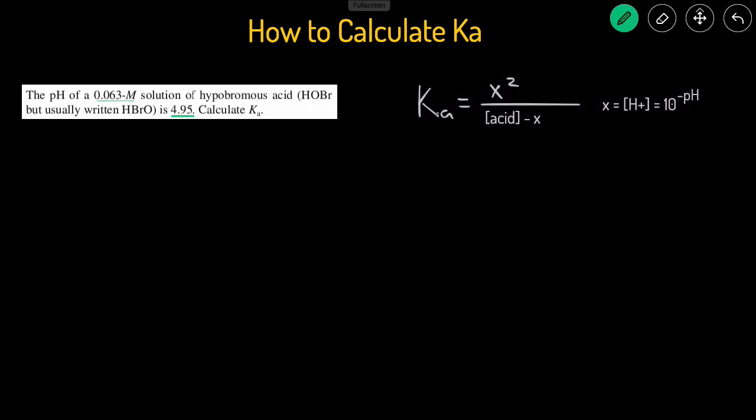The way we do it is by using the shortcut that Ka equals x squared divided by the concentration of the acid minus x, where x equals the concentration of H+, which is equal to 10 raised to the power of negative pH. So let's apply that to this problem.